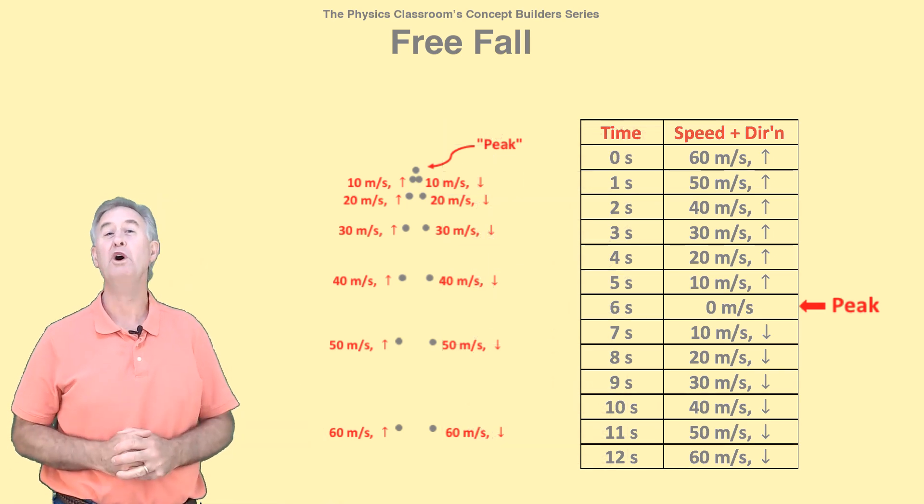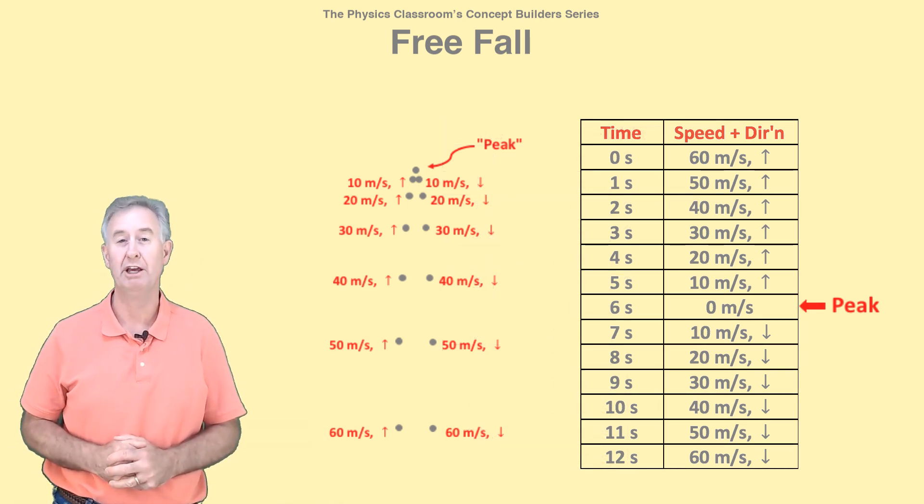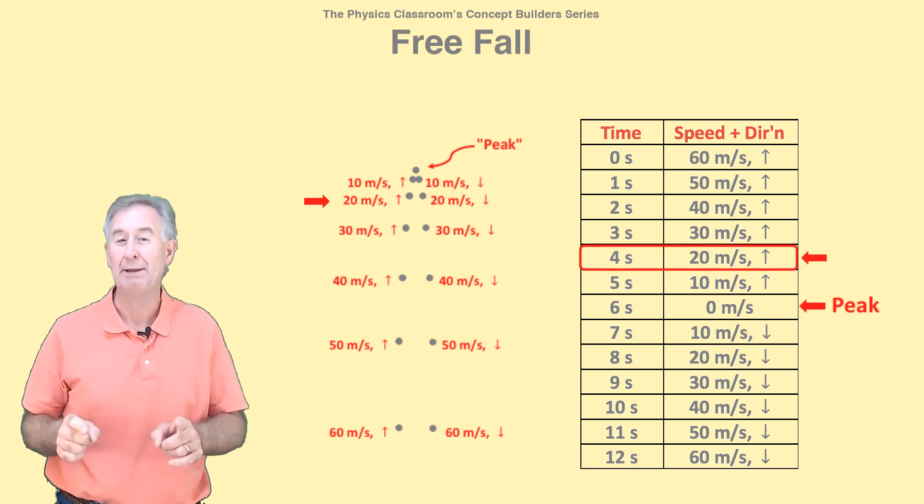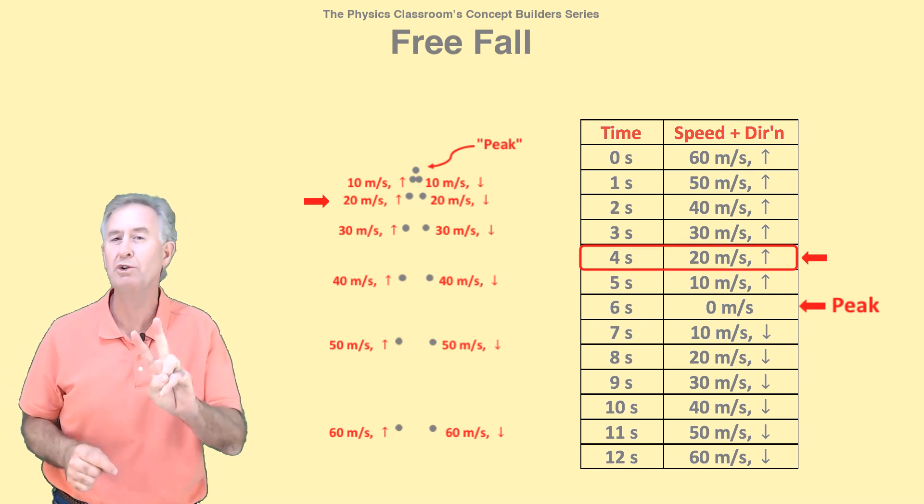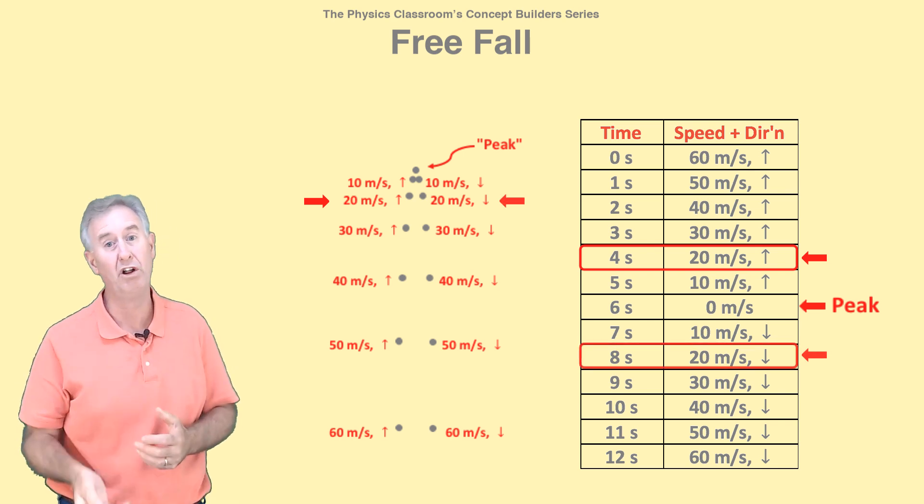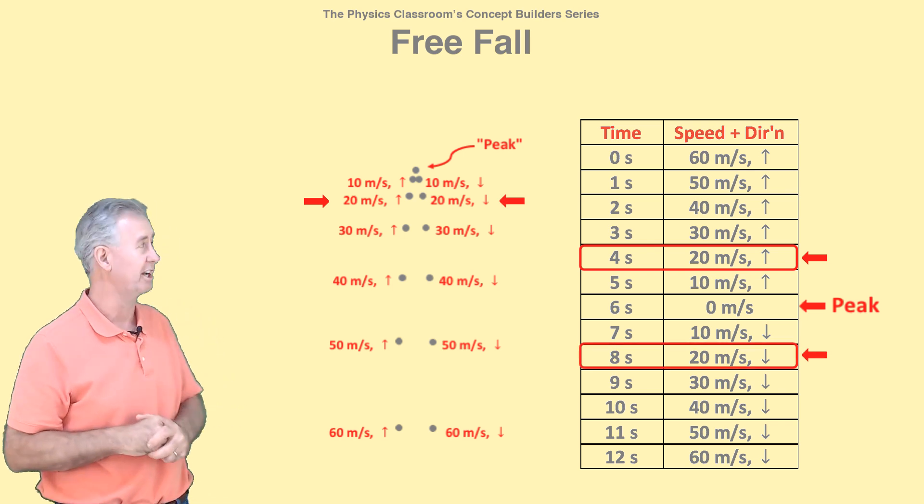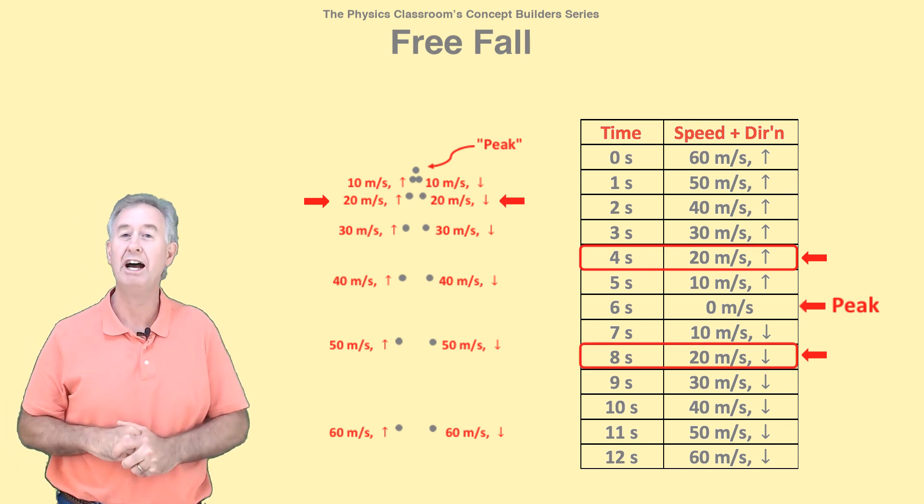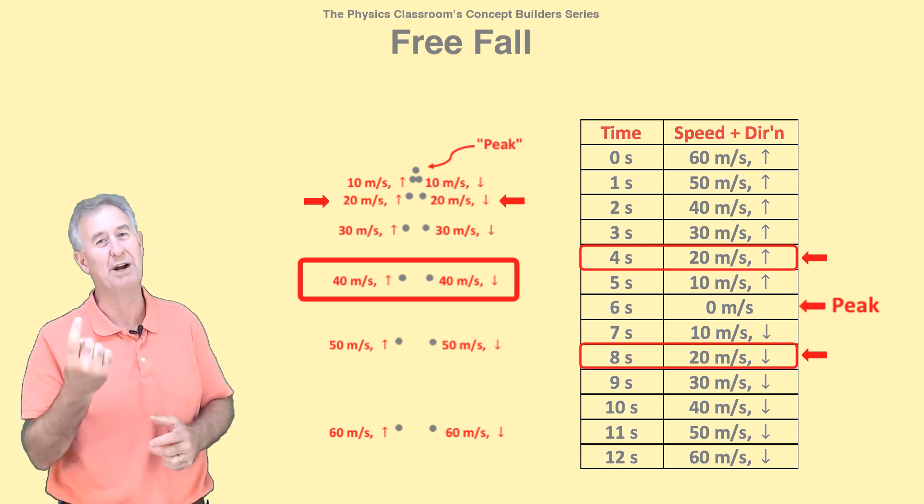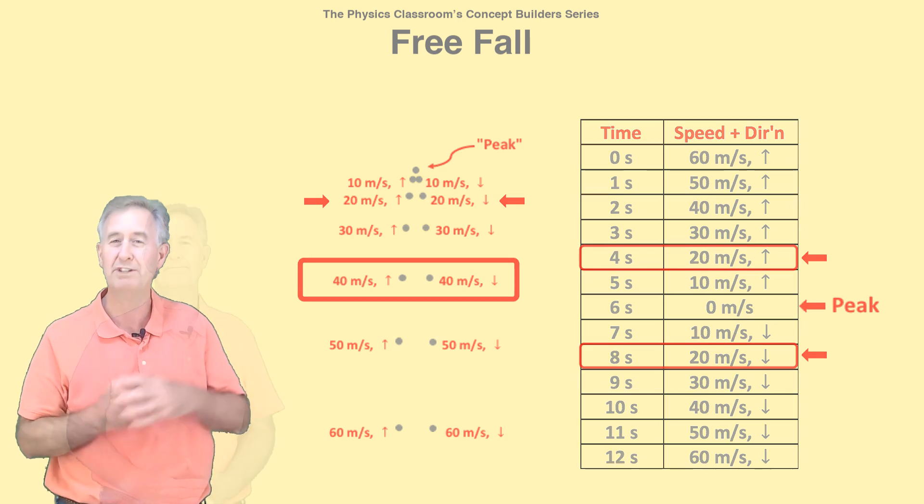Finally, it's worth noting that there are two times at which the object has a speed of 20 meters per second. One time when the object's rising, two seconds before its highest point. And the other time when it's falling, two seconds after its highest point. Wherever the object has the same height, it has the same speed. At one point when it's rising, and the other point when it's falling.